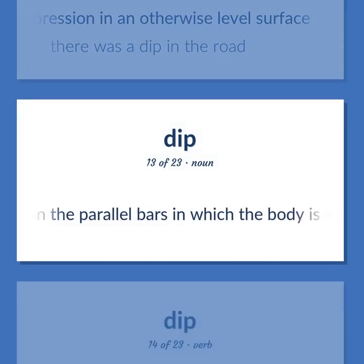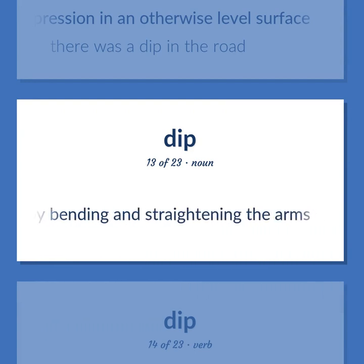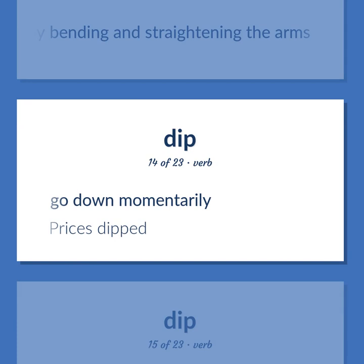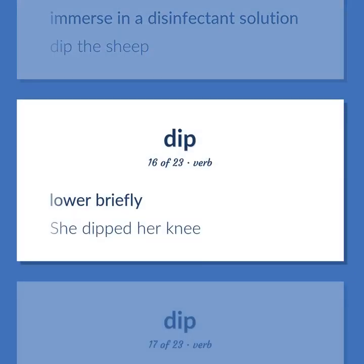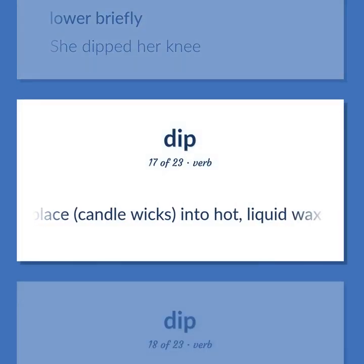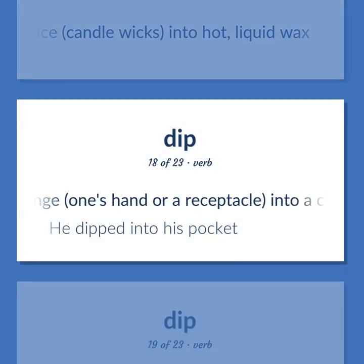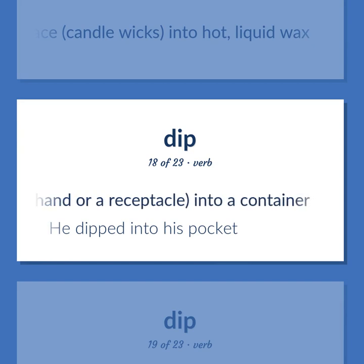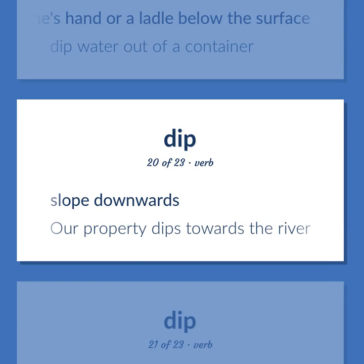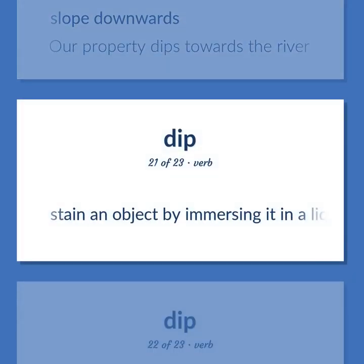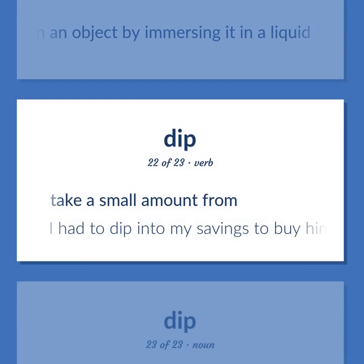A gymnastic exercise on the parallel bars in which the body is lowered and raised by bending and straightening the arms. Go down momentarily — prices dipped. Immerse in a disinfectant solution — dip the sheep. Lower briefly — she dipped her knee. Place candle wicks into hot liquid wax. Plunge one's hand or a receptacle into a container — he dipped into his pocket. Scoop up by plunging one's hand or a ladle below the surface — dip water out of a container. Slope downwards — our property dips towards the river. Stain an object by immersing it in a liquid. Take a small amount from — I had to dip into my savings to buy him this present.